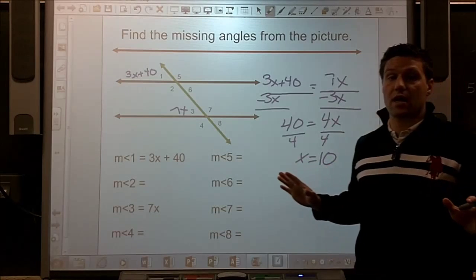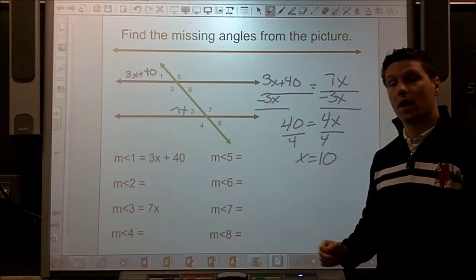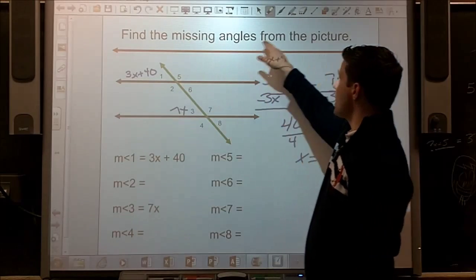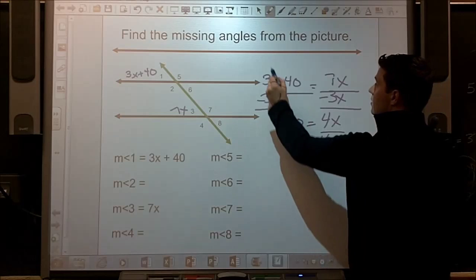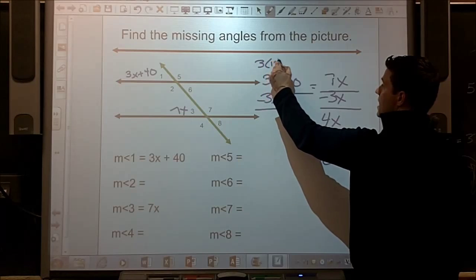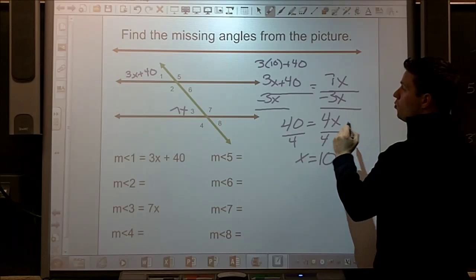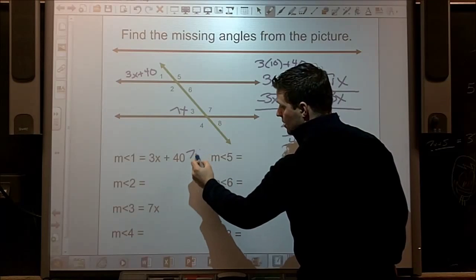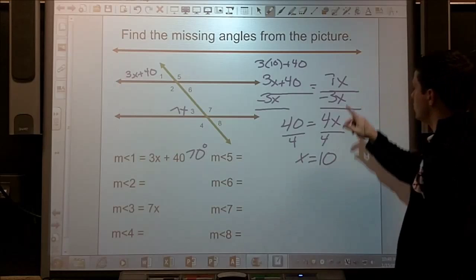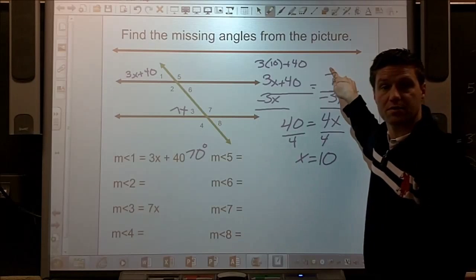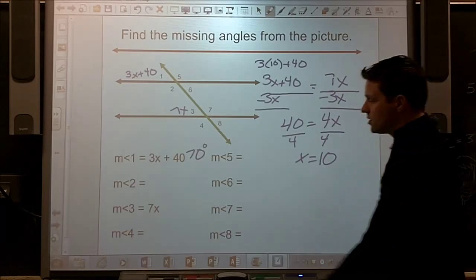Now, that doesn't get me to my answer. That only gets me part of the way. Find the missing angles. So if I go into this angle, 3 times 10 plus 40, that means angle 1 is going to be 70 degrees. Could check it here, too. 7 times 10 is going to be 70 degrees.